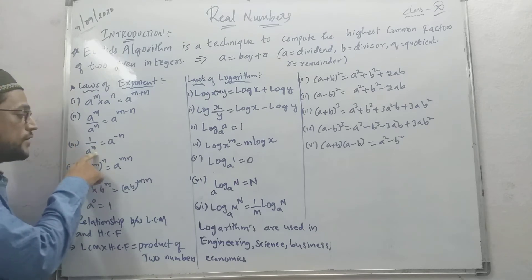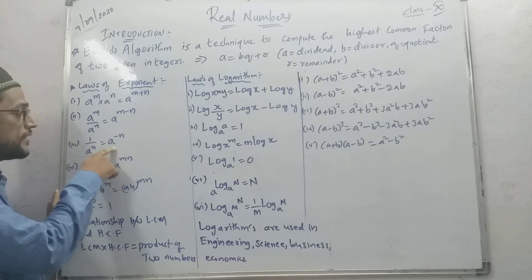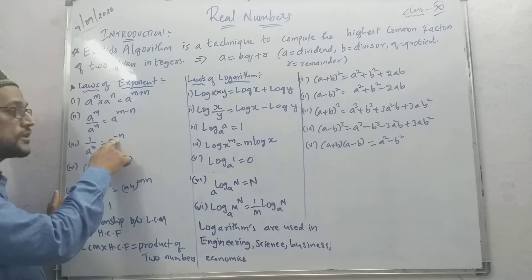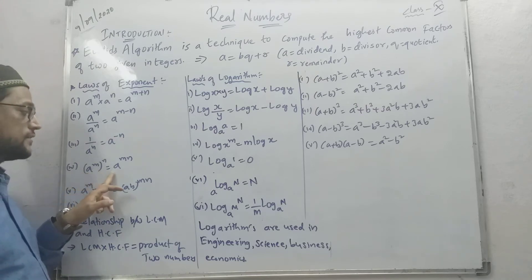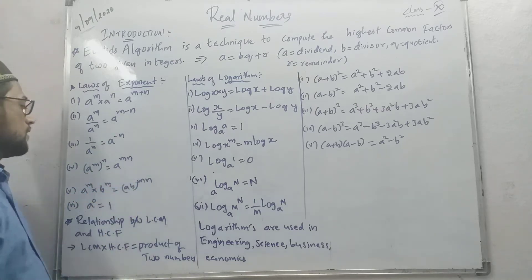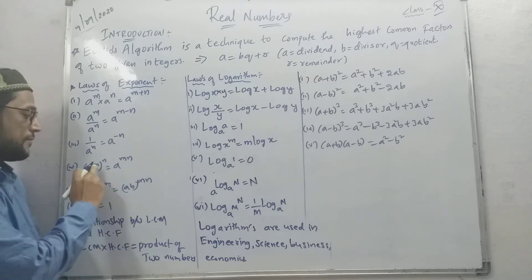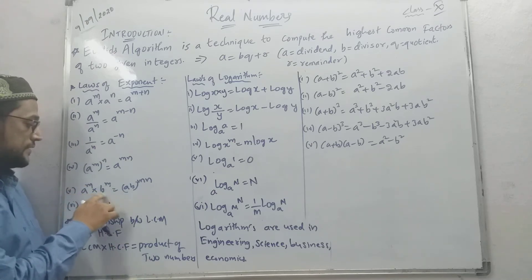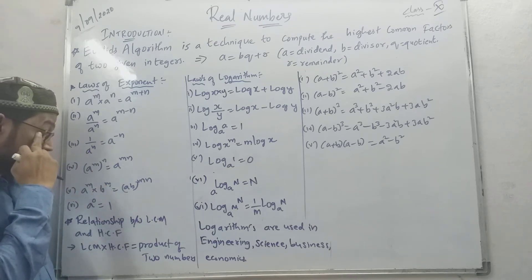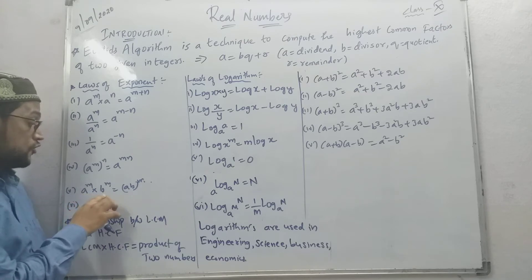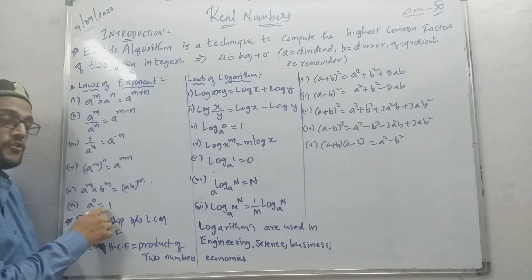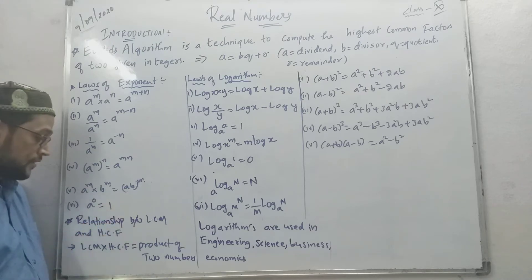Third formula: 1 by A power M is equal to A power minus M — because moving to the numerator changes the sign of the power. Fourth: A power M whole power N — powers multiply, giving A power MN. Fifth: A power M into B power M — base is different but power is same, so it becomes A into B whole power M. Sixth: A power 0 is equal to 1.